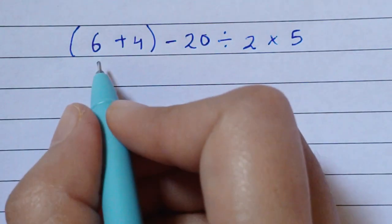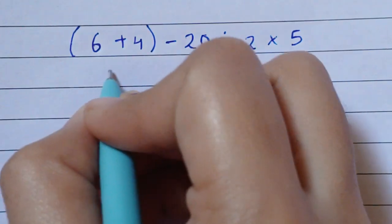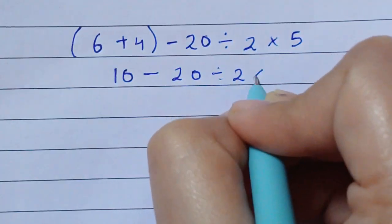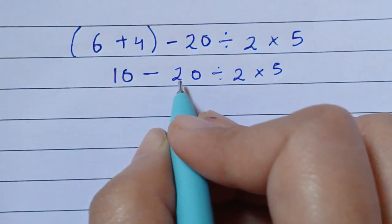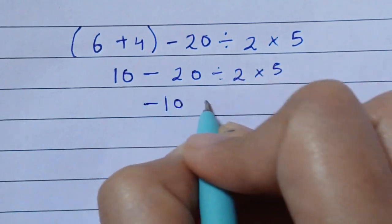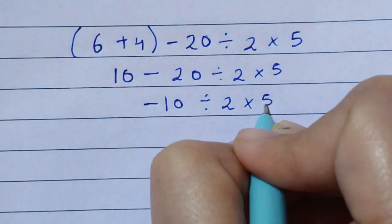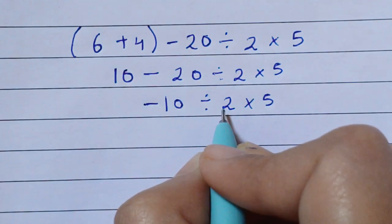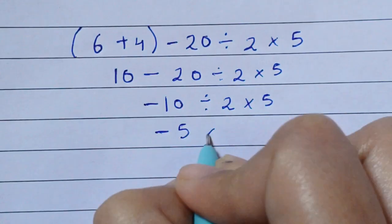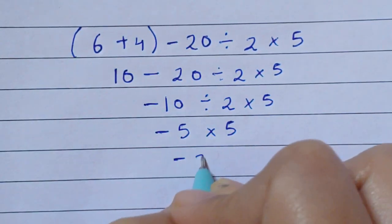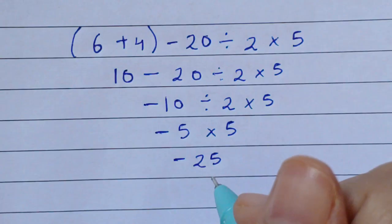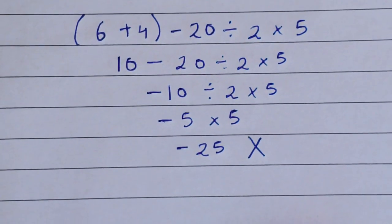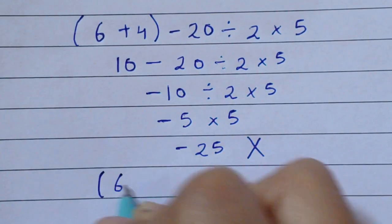So let's solve this. Here 6 plus 4 equals 10, minus 20 divided by 2 times 5. Next, 10 minus 20 is minus 10, divided by 2 times 5. Then minus 10 divided by 2 is minus 5, times 5, which gives minus 25. If you think minus 25 is the correct answer, you are wrong — this is the wrong value.